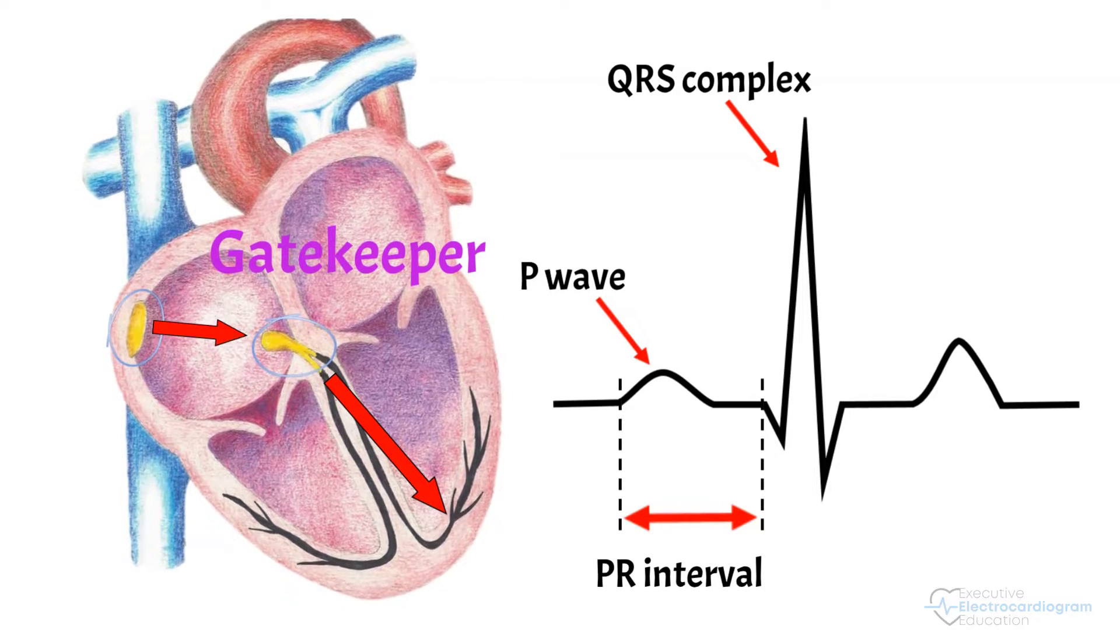Finally, the electrical activity of the ventricle resets. This is called ventricular repolarization and is shown by a T wave on the ECG.